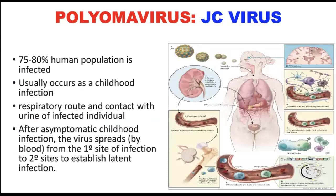Moving on to JC virus — JC virus is said to have infected 75 to 80% of the human population, usually starting in childhood, but remaining asymptomatic. Mode of transmission is usually the respiratory route or contact with contaminated urine. After asymptomatic primary infection during childhood, the virus spreads by hematogenous route from the primary site to secondary sites like the kidneys, lymphoid tissues, peripheral blood leukocytes, and brain, to establish latent infection.